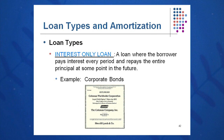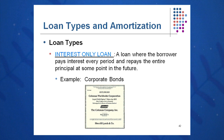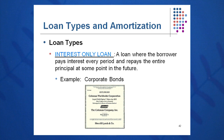Another loan type you may see is a corporate bond — an interest-only loan — where the borrower, the corporation, pays interest every period and gives you your principal back at some point in the future. A corporate bond is simply an interest-only loan, which we'll cover in session number seven. Essentially, a corporate bond is a $1,000 interest-only loan typically paid back over a 30-year term, so they give you your $1,000 back at the end of 30 years.